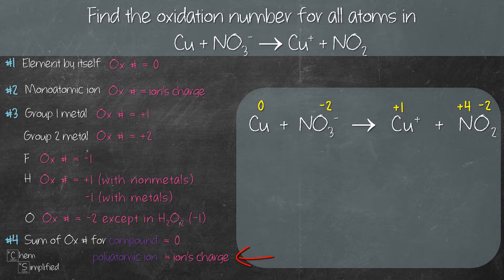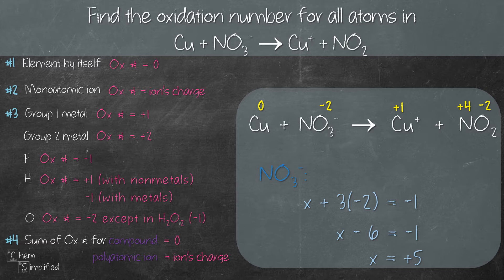We have a polyatomic ion in this equation which is the nitrate ion NO3 minus. So we apply the same rule and we use X again to represent the oxidation number for nitrogen in NO3 minus, and we solve to get X equals plus five. That means the oxidation number for nitrogen in NO3 minus is plus five.